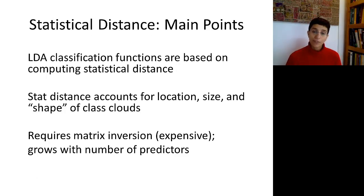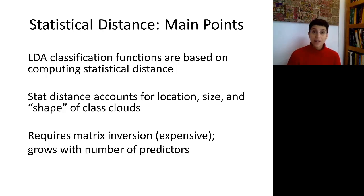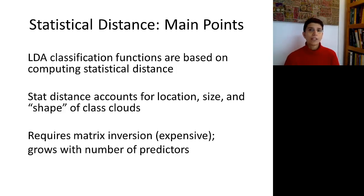To summarize: linear discriminant analysis classification functions are based on computing statistical distance. Unlike Euclidean distance, statistical distance accounts for all three aspects — location, size, and shape of the class clouds — in other words, the centroids, the spread, and the correlations between predictors. Note that the formula requires an inversion of the covariance matrix S, which can be computationally expensive with many predictors. So discriminant analysis is very easy and useful with small samples, but may take a long time with very large numbers of predictors.